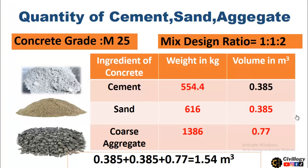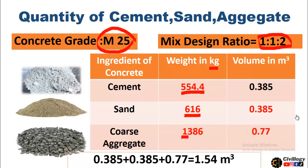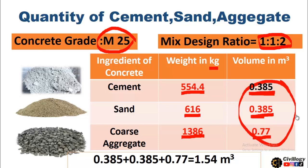To summarize: for M25 grade concrete with 25 megapascal strength and mix ratio 1:1:2, the quantities required per cubic meter are — cement: 554.4 kg; sand: 616 kg; coarse aggregate: 1386 kg. Their volume equivalents are cement 0.385 m³, sand 0.385 m³ — same volume but different weight due to different densities — and aggregate 0.77 m³. If we sum these three volumes, 0.385 + 0.385 + 0.77 = 1.54 cubic meters, which is the dry volume of ingredients needed to produce 1 cubic meter of concrete.